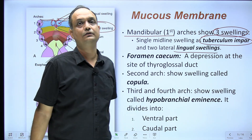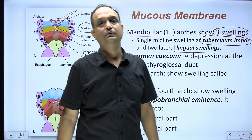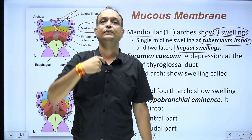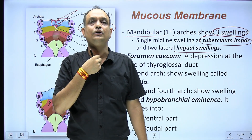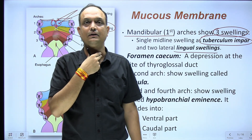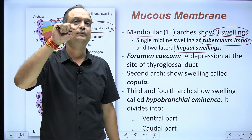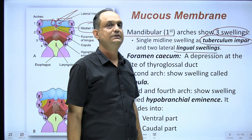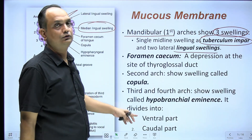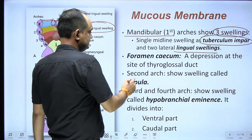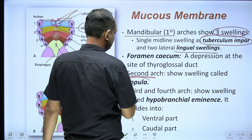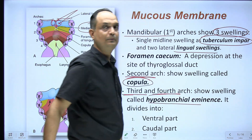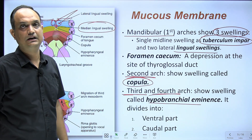Behind the lateral swellings and tuberculum impar, there is the appearance of the foramen cecum — the origin of the thyroglossal duct, which runs downward into the neck to form the thyroid gland. Behind the foramen cecum in the midline, two more swellings appear: the copula, developing from the second arch, and the hypobranchial eminence (also called hypopharyngeal eminence), developing from the third and fourth arches.